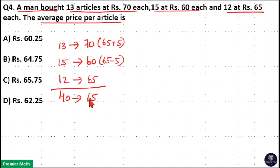Now, I took 65 as common average for these 40 articles. Now, here extra is plus 5 and minus 5. So this plus 5 extra average is for these 13 articles. So plus 5 into 13 is plus 65 rupees.